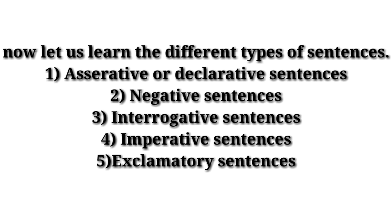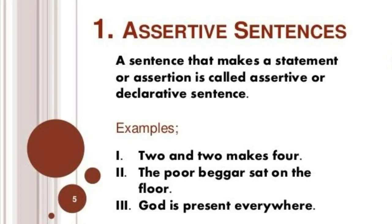Let us see what is an assertive sentence. A sentence that makes a statement or assertion is called an assertive or declarative sentence. Examples: two and two makes four; the poor beggar sat on the floor; God is present everywhere.